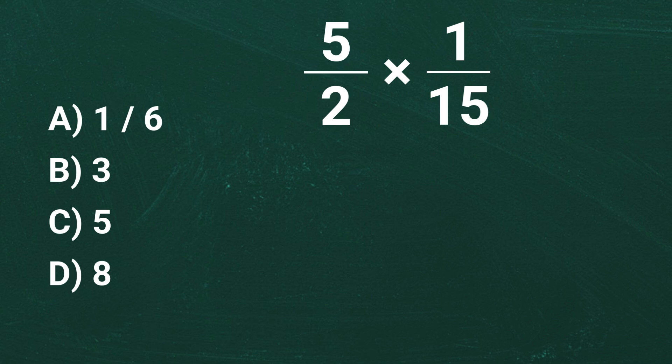But wait, before we multiply, let's see if we can simplify even more. We notice that 5 in the numerator and 15 in the denominator share a common factor of 5. So let's divide both by 5. 5 divided by 5 is equal to 1, 15 divided by 5 is equal to 3.